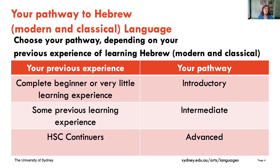The first thing I'd like to do is tell you a little bit about the pathways to studying Modern and Classical Hebrew at the University. We have three different pathways. If you have no previous experience — you're a complete beginner or have very little learning experience — you'd probably be best to join our introductory pathway. If you have some previous experience, namely you studied Modern or Classical Hebrew at school or some other framework, you're most likely to join our intermediate pathway.